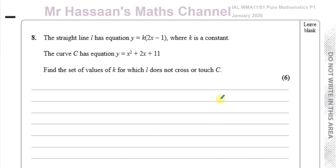This question is about a straight line which has an equation y equals k times 2x minus 1, where k is a constant, and a curve c which has an equation y equals x squared plus 2x plus 11. You want to find the set of values of k for which the line l does not cross or touch c.